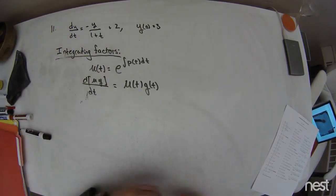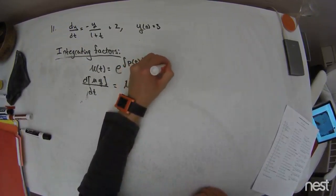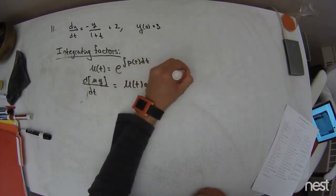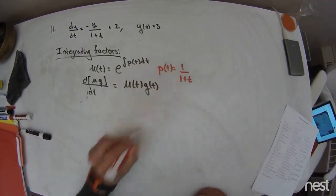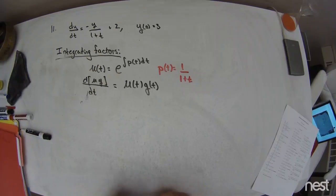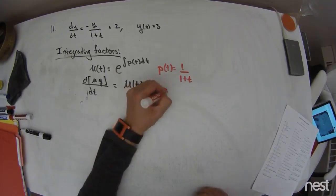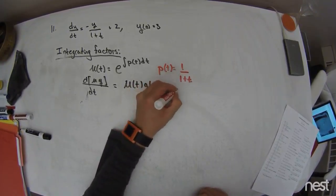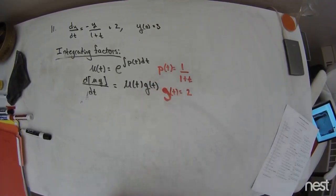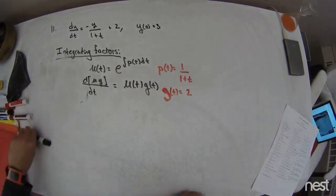And for standard form, all of the y term, all of the dependent stuff needs to be on the left hand side. So in my case, p of t is equal to 1 over 1 plus t. You want to notice the sign change there. And then my g of t is equal to 2, all the leftover stuff on the right hand side.